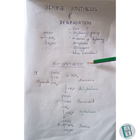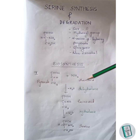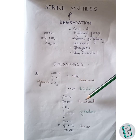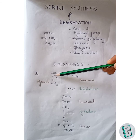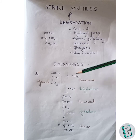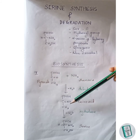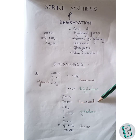Now let us move on to the biosynthesis of serine. There are two pathways for the synthesis of serine. In the first pathway, the precursor molecules are pyruvate and ammonium. In the first step, pyruvate condenses with ammonia to form an amino acid. Two hydrogens of the ammonia molecule along with the oxygen of this carbon leave as a water molecule, and the remaining NH group joins with this carbon to form a C double bond NH bond, thus forming an amino acid.